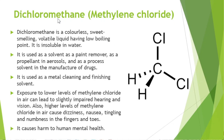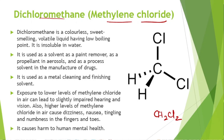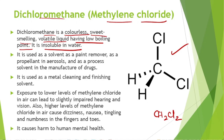Dichloromethane has the formula CH₂Cl₂, where carbon has two hydrogen atoms and two chlorine atoms attached. Dichloromethane is a colorless, sweet-smelling, volatile liquid with a low boiling point and is insoluble in water.